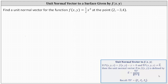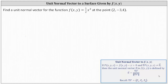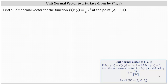Referring to our notes, to find a unit normal vector to f(x, y), we let F(x, y, z) = f(x, y) - z = 0. As long as the gradient of F doesn't equal the zero vector, the unit normal vector equals the gradient of F divided by the magnitude of the gradient of F.